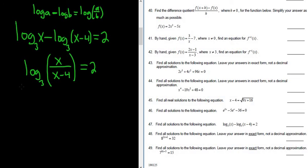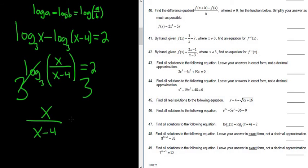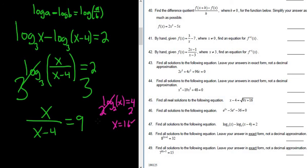Now we have to get rid of the log. There's a 3 in the base, so what you can do is exponentiate — put a 3 on both sides, and these cancel. You get x over x minus 4 equals 3 squared, which is 9. For example, if we had log base 2 of x equals 4, the base is 2, so you put a 2 on both sides, these cancel, and you get x equals 16.